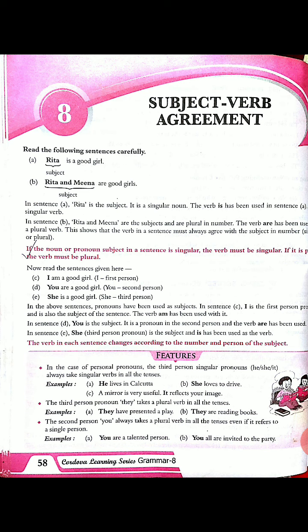Why have I used 'was'? Because 'she' is a singular pronoun or singular subject. With a singular subject we use 'was.' Instead of 'was' we can also use 'is' or 'has.' All these are verbs. If we say 'she have,' that is going to be wrong, because 'has' is used with singular subjects.